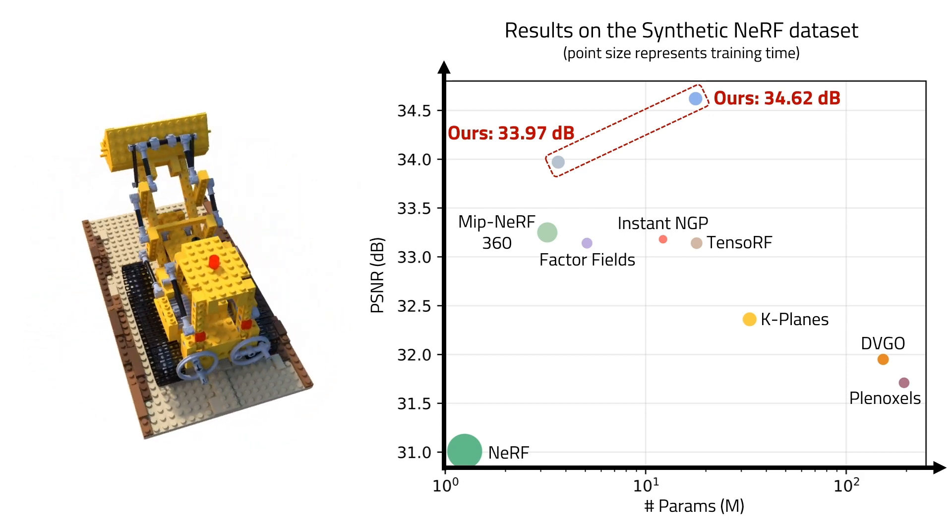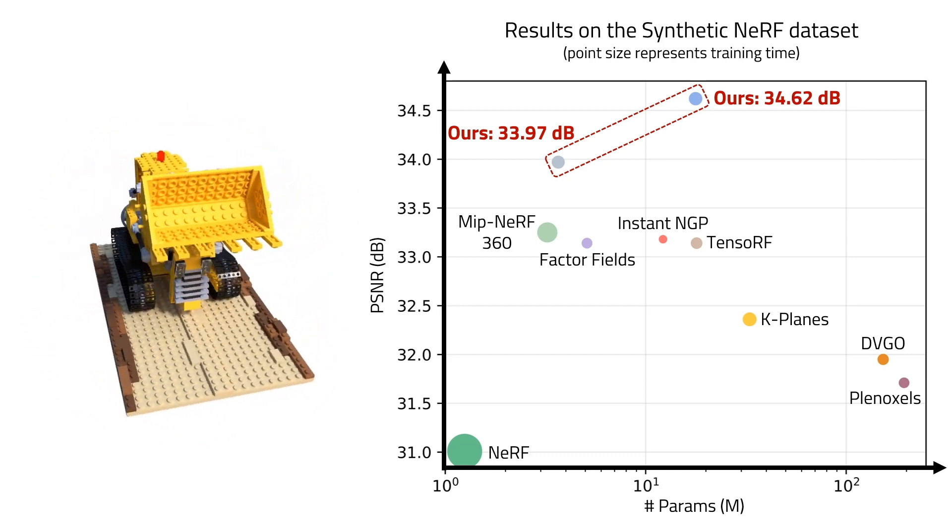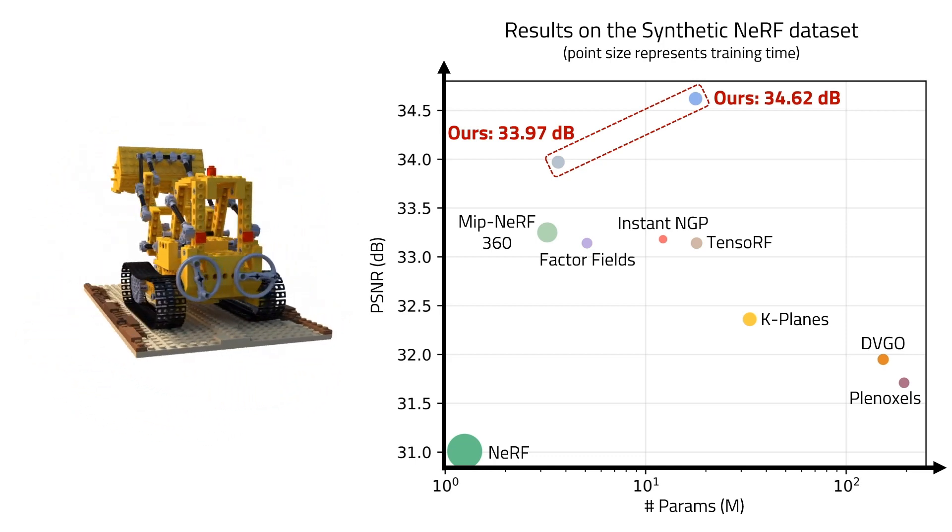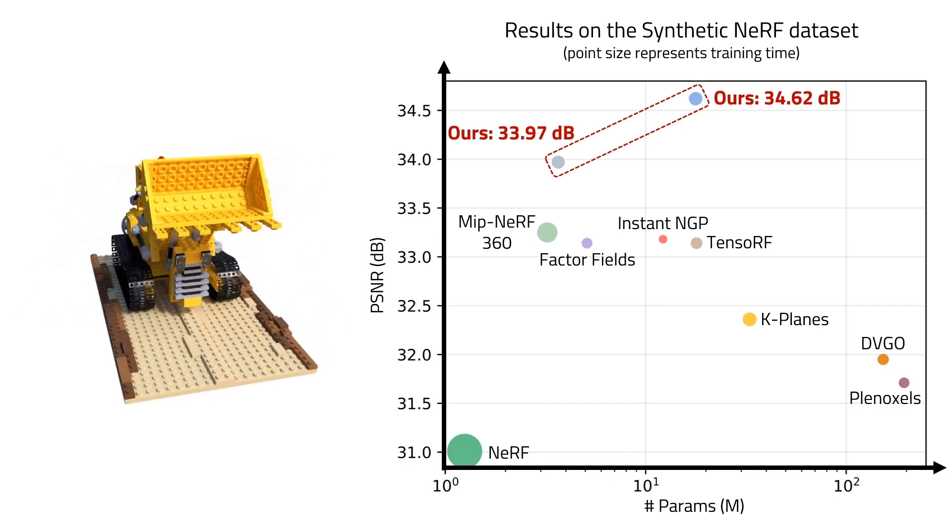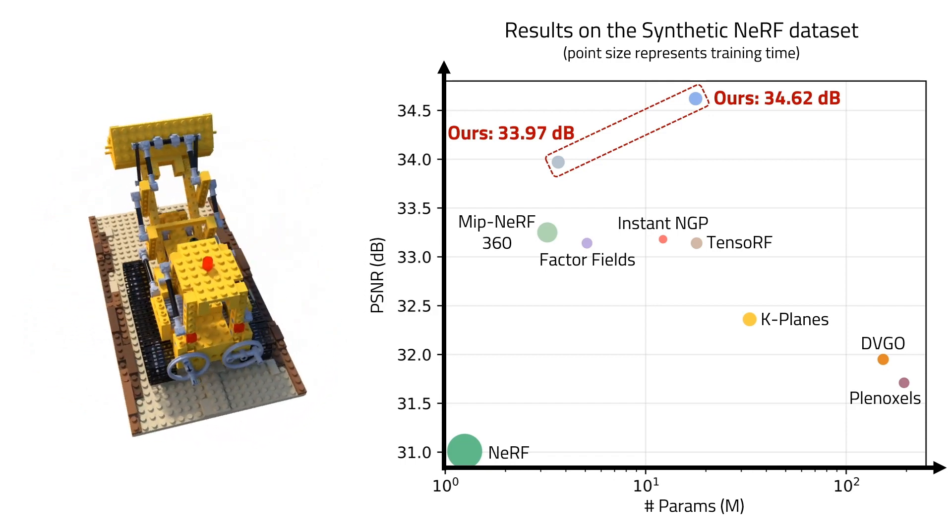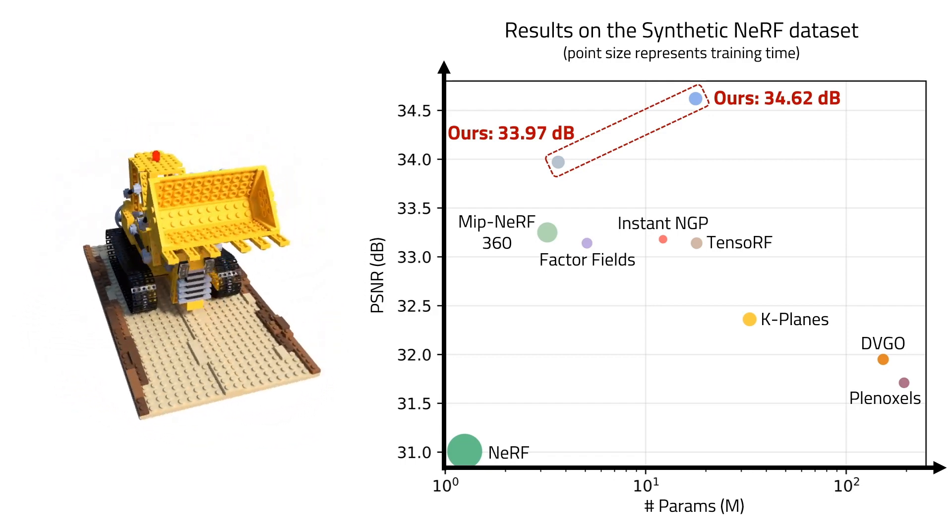At the same time, our model has less parameters and comparable training time with TENSO RF. After reducing to 3.6 million parameters, our method still retains a PSNR close to 34.